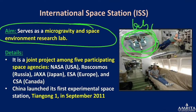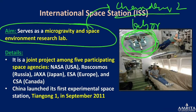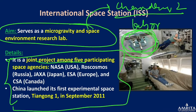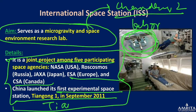The ISS acts as a microgravity and space environment research laboratory, used for experiments and tracking of space missions — it reportedly contributed some information on Chandrayaan-2. It is a joint venture among five space agencies: NASA (USA), Roscosmos (Russia), JAXA (Japan), ESA (Europe), and CSA (Canada). China launched its own experimental space station, Tiangong-1, in September 2011.